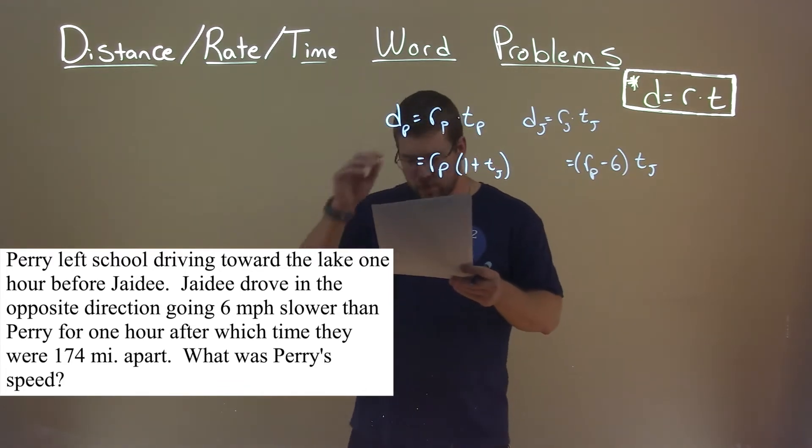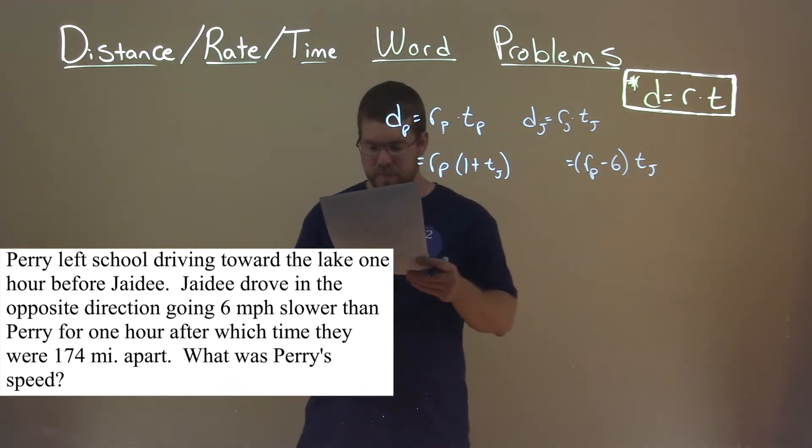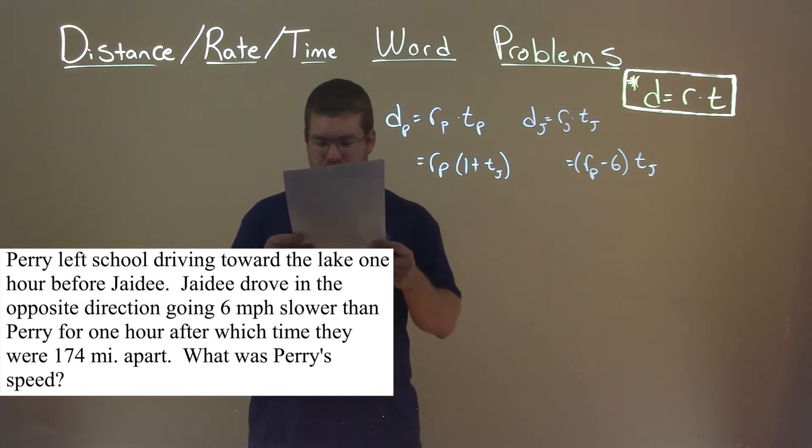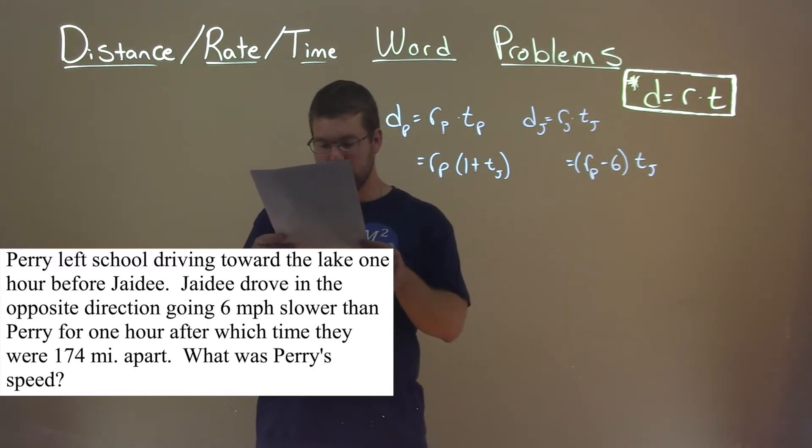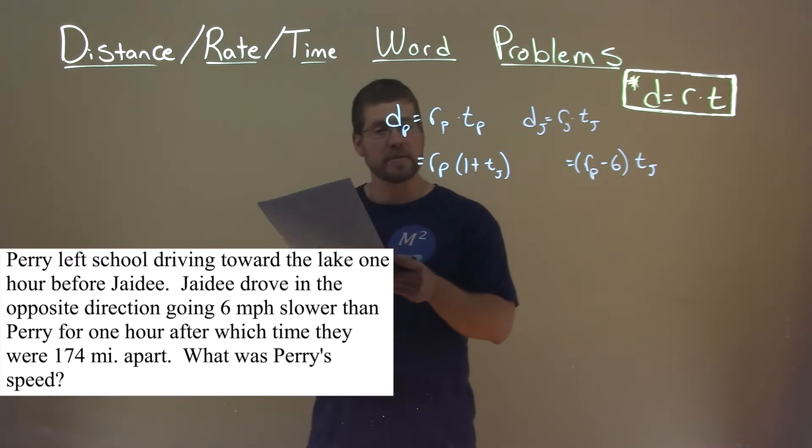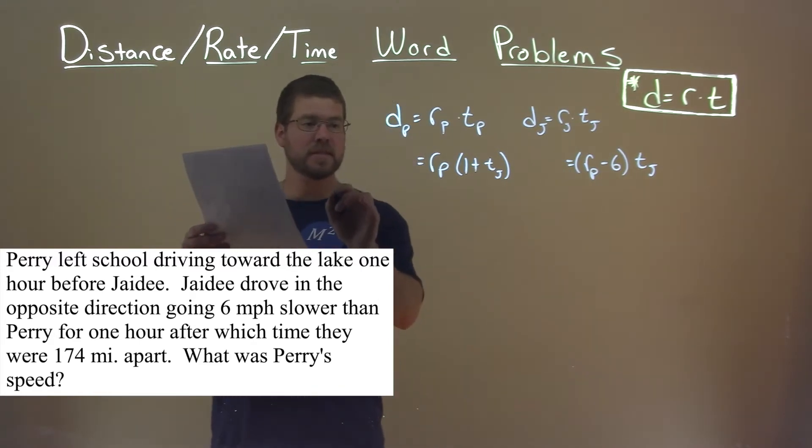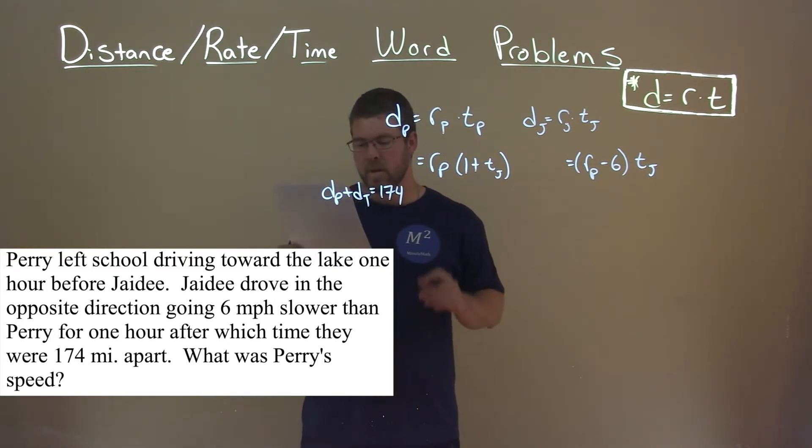So one thing they do tell us here, and this is the little kicker here, is that they say that after all this, they were 174 miles apart. So that means their distance, D of P plus D of T, is equal to 174.